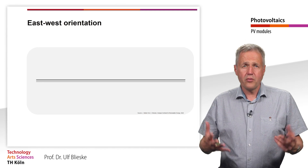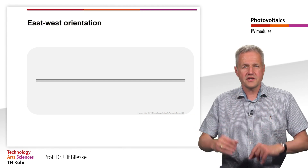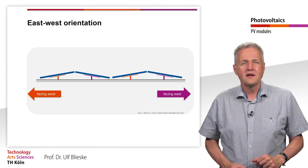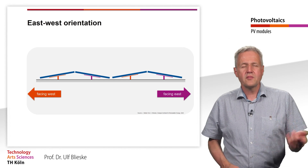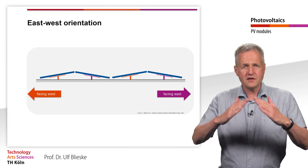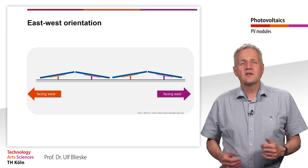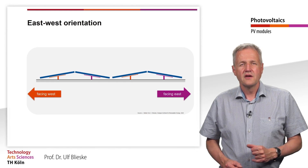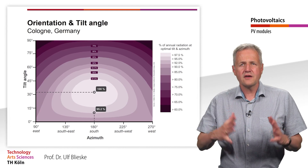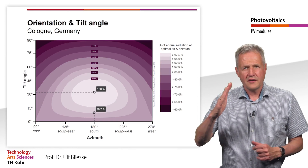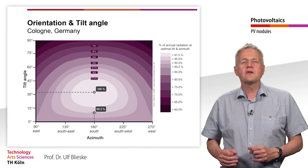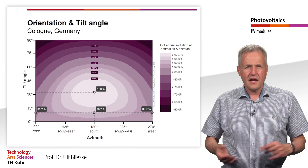An option that has become increasingly popular on flat roofs in recent years is the east-west orientation. In this case, half of the modules are oriented towards the west and the other half towards the east. The angle of inclination is usually 10 degrees, the same as for normal south-facing systems. A big advantage of the east-west orientation is that no distance between the modules is needed. The main disadvantage is the reduced annual yield compared to the optimum orientation. With a classical plant with a tilt angle of 10 degrees and south orientation, we get an annual irradiation of 95.2% compared to the maximum with the optimum tilt angle. If we now orient the modules towards the east or west, the annual irradiation drops by another 5% to 89.7%.